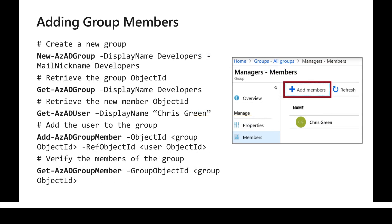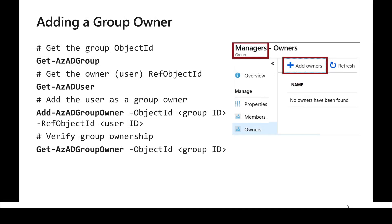We can manage groups with PowerShell as well. New-AzureADGroup creates a new group, Get-AzureADGroup retrieves the group object, Add-AzureADGroupMember adds users to the group, and Get-AzureADGroupMember shows the group members. For each group we can also assign a group owner using Add-AzureADGroupOwner, where the object ID becomes the owner of the group.